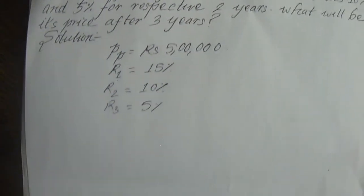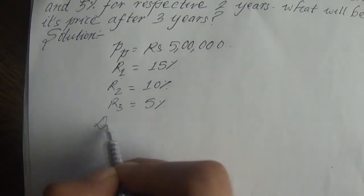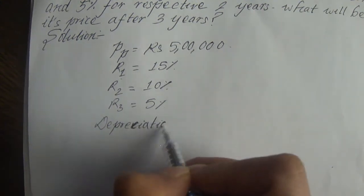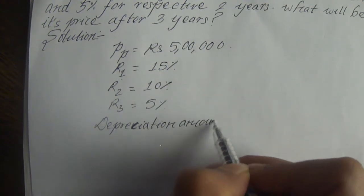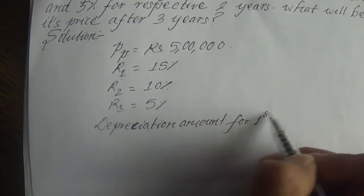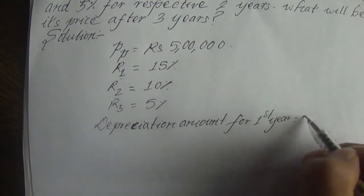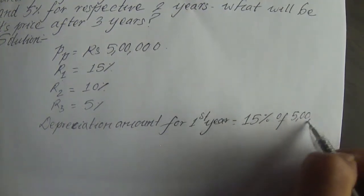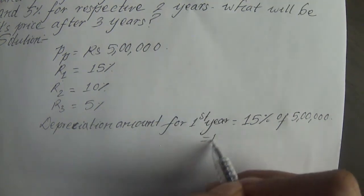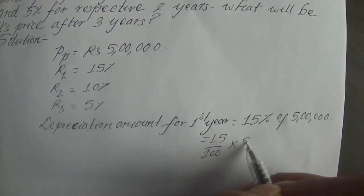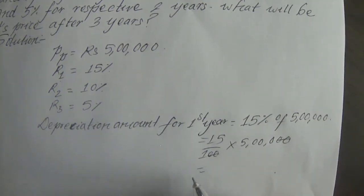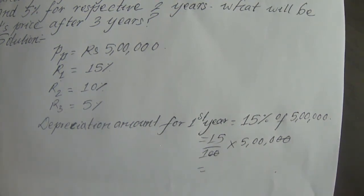Depreciation amount for first year: I am using 15%. 15% of five lakh. So, 15 divided by 100 into 5,00,000.